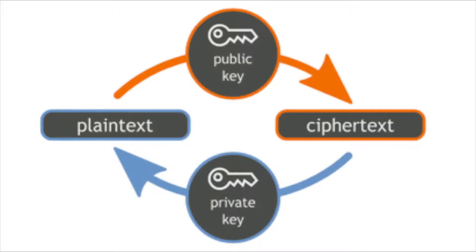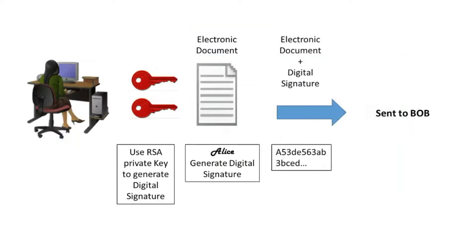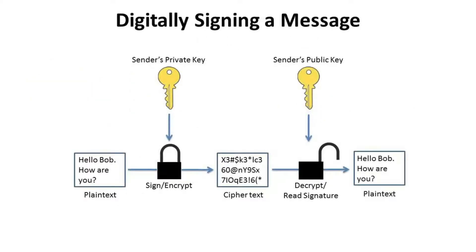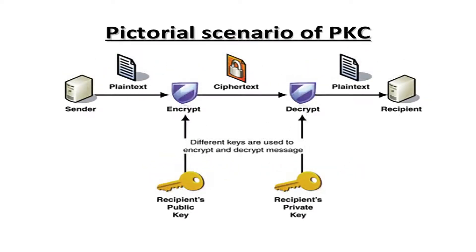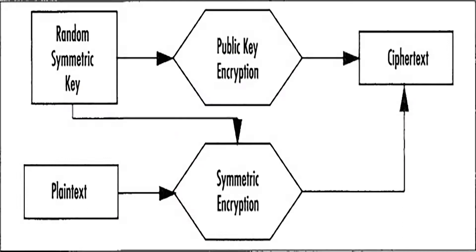RSA public key cryptosystem: RSA is one of the first practical public key cryptosystems and is extensively used for secure data transmission. In such a cryptosystem, the encryption key is public and differs from the decryption key which is kept secret. A public encryption method relies on a public encryption algorithm, a public decryption algorithm and a public encryption key. Using the public key and encryption algorithm, anyone can encrypt a message. The decryption key is known only to authorized parties.